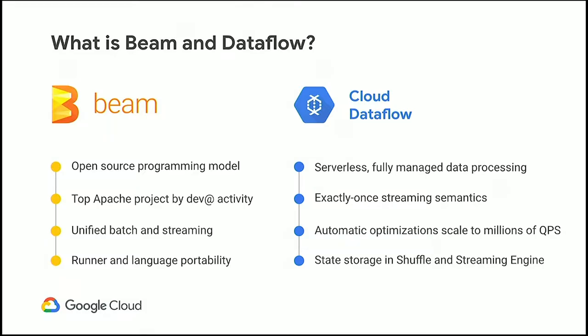Users like the fact that Apache Beam provides a simple and unified batch and streaming API. You don't have to use different toolsets for batch and streaming — you can use one set of tools, one API. Portability is another big selling factor: you can write your Apache Beam pipeline and run it in Google Cloud on Dataflow, or you can run it on Apache Flink, either in a different cloud or on-premises.